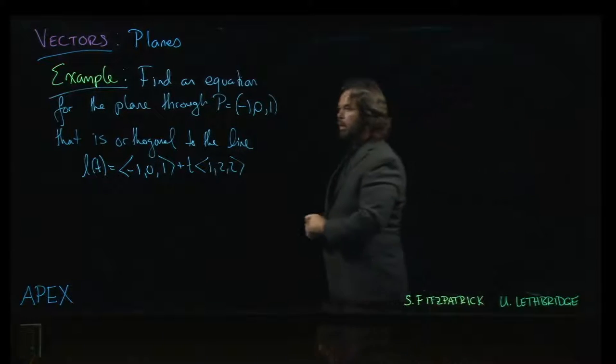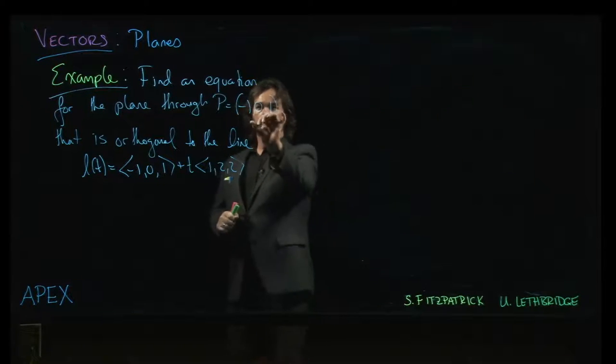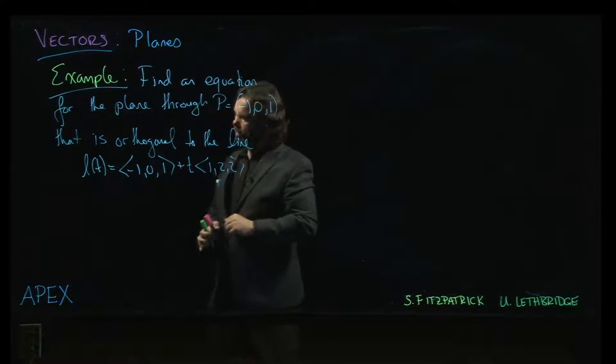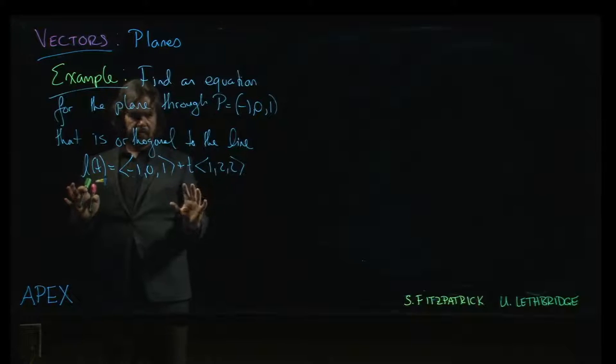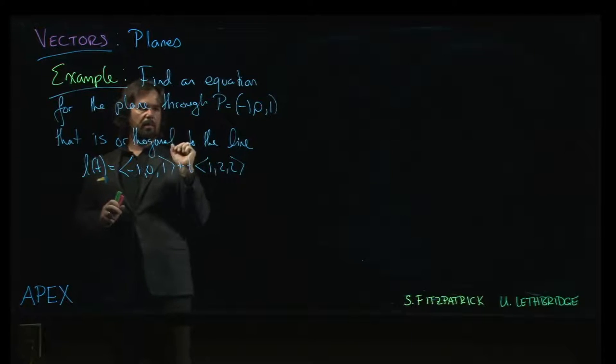I'm going to do another example. This time the information that we're given is a point on the plane and a normal line if you like. We want a plane through this point orthogonal to a given line.